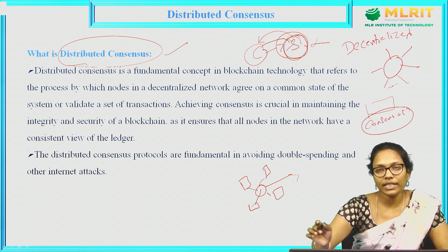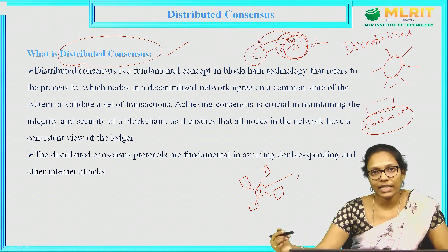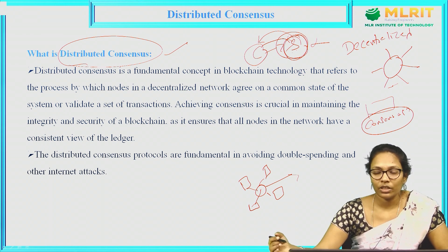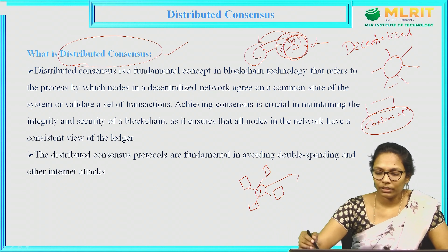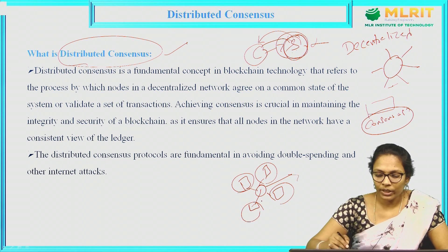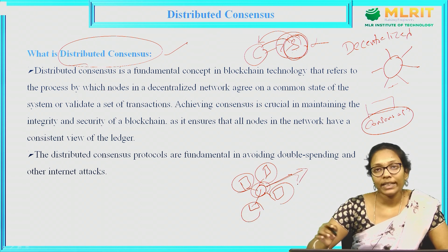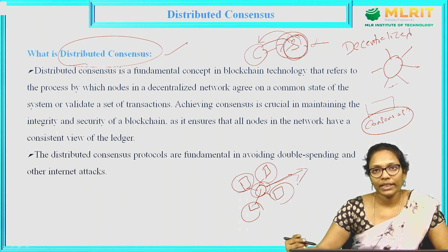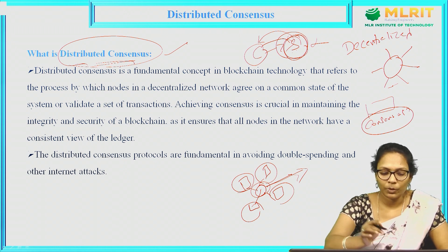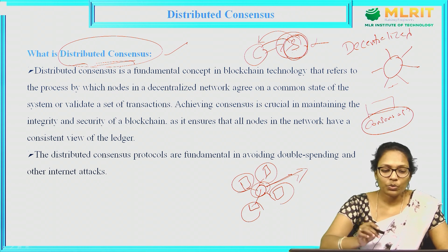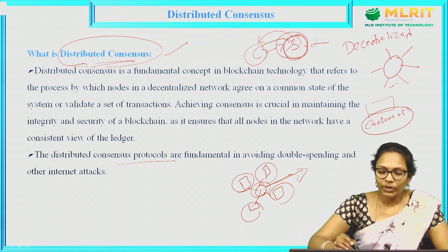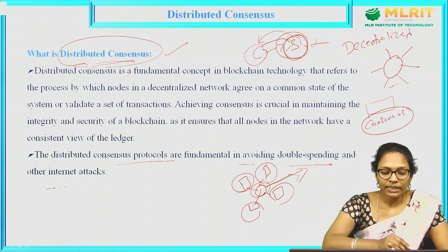Here the server is a centralized authority. But in the blockchain, we do not have any server mechanism. There is no central person to monitor the action, to validate the transaction or any action. So all the nodes in the network will make one agreement to validate the transaction — whether the transaction is valid or not. That process is called Distributed Consensus. Using this Distributed Consensus, we can avoid double spending and other internet attacks.